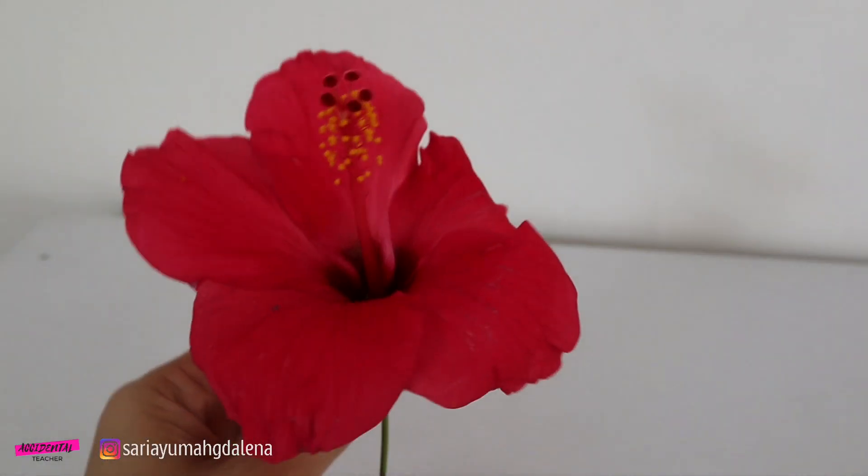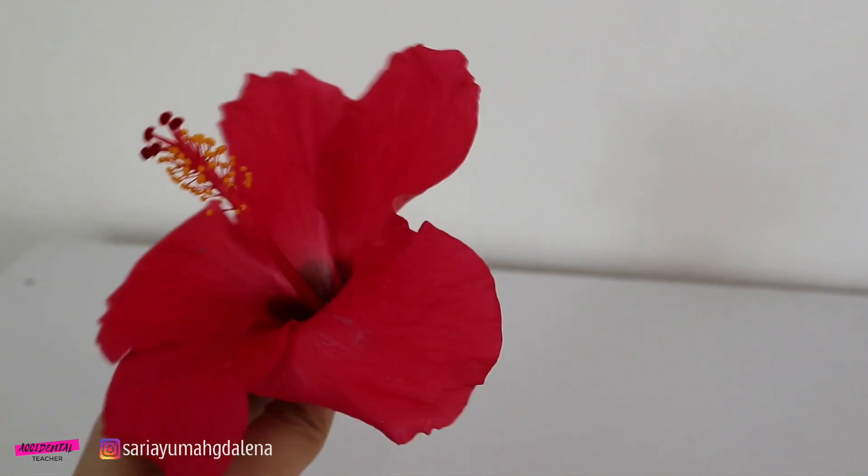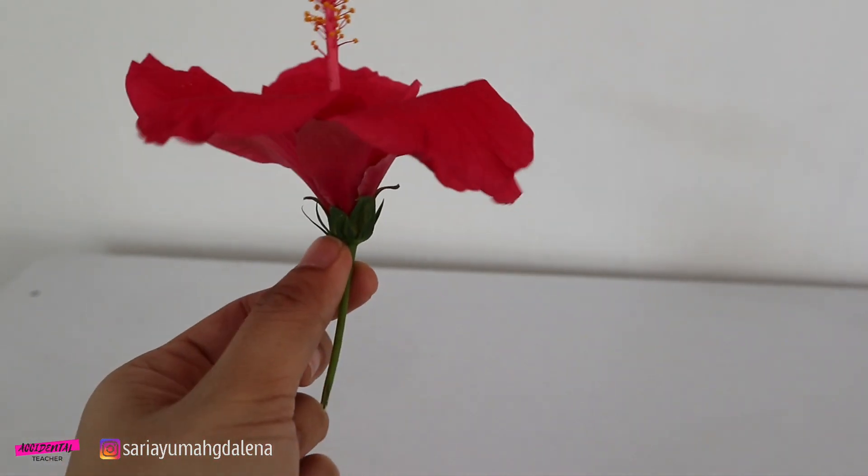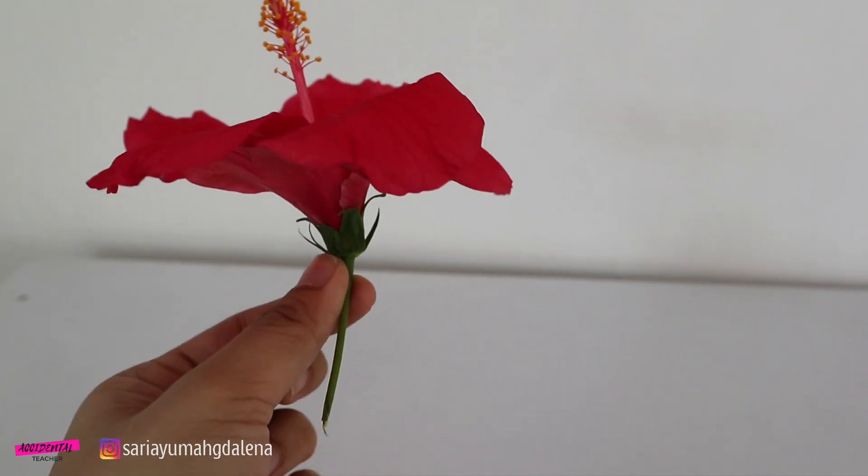This is the whole shape of the flower. You can see here that the flower has five petals, sepals, and stem.